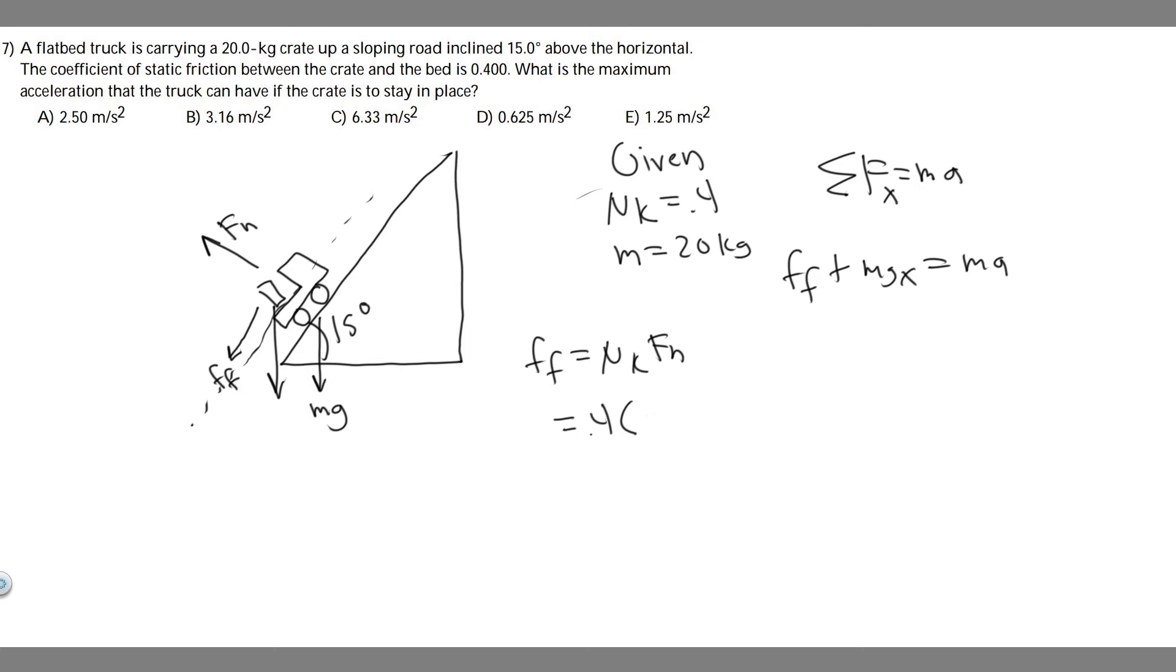And so f sub n in this case is equal to, since we're going up this way, it's equal to the y direction of the weight force, which is mg times the cosine of theta. And keep in mind, the x direction for the weight or the force due to gravity is mg times the sine of theta.